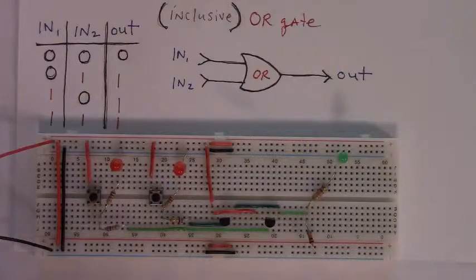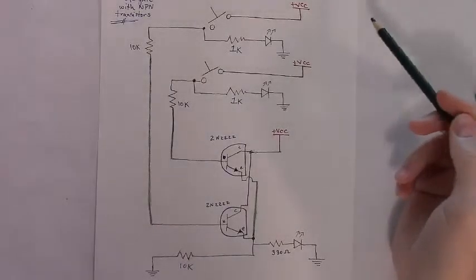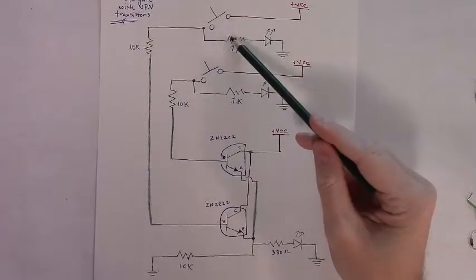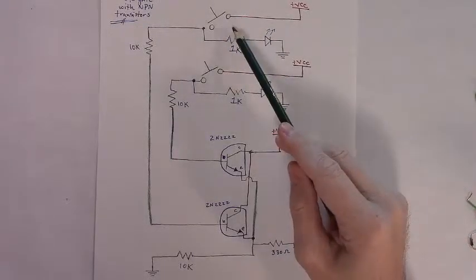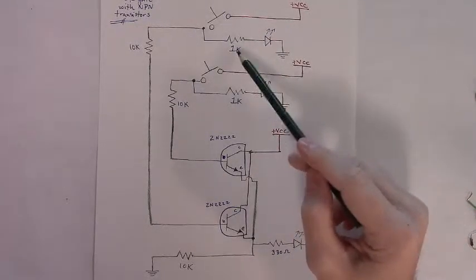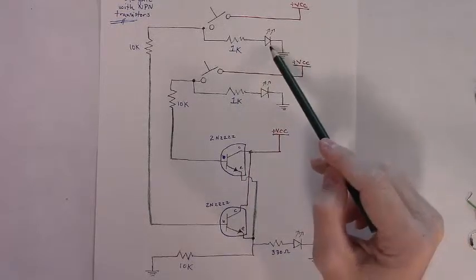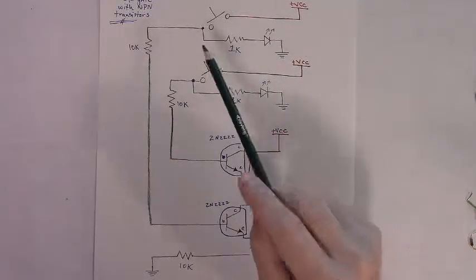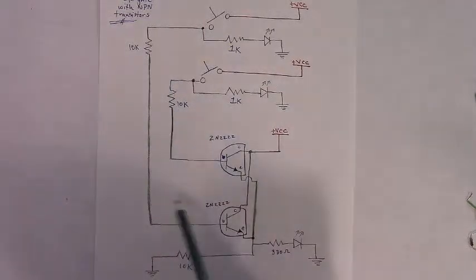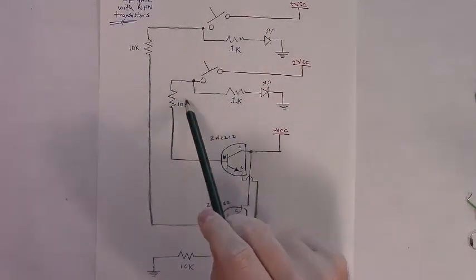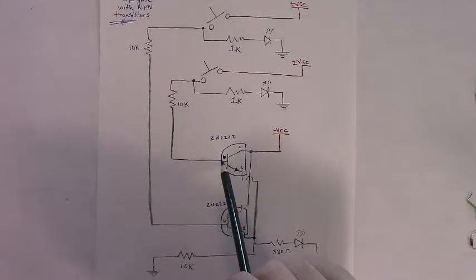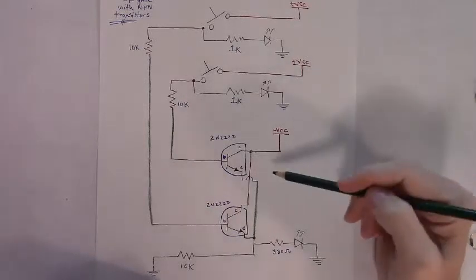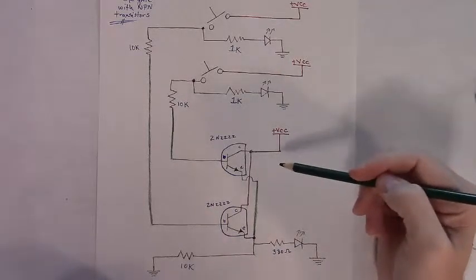Let's look at the schematic and build the circuit. We'll have two normally open momentary buttons to serve as our inputs to our OR gate circuit. Each of those momentary buttons will have an LED through a 1K resistor going to ground to indicate whether our input is high or low. They'll mirror one another.